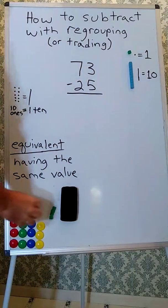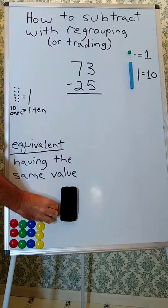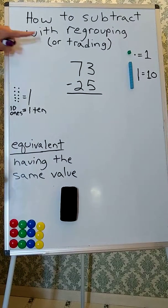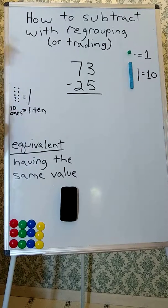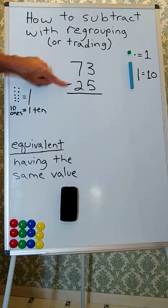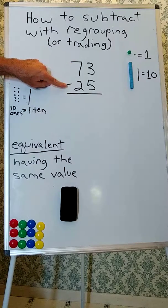Hello everyone, I'm Xian Cheng Math, and in this video, this is part two of how to subtract with regrouping or trading. We'll do the same subtracting problem that we did before: 73 take away or minus 25.